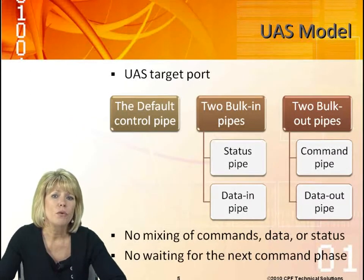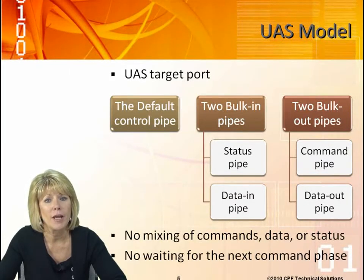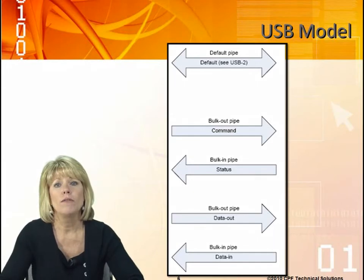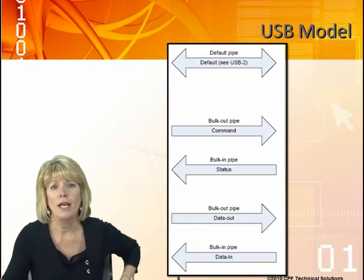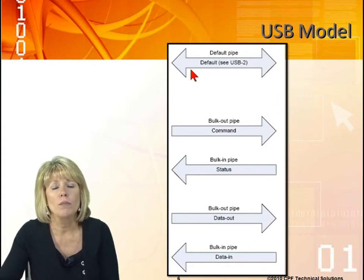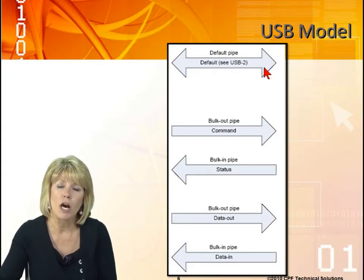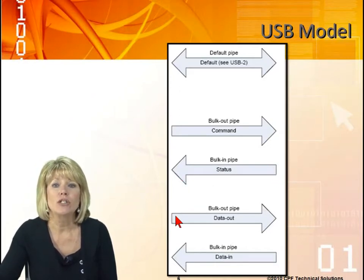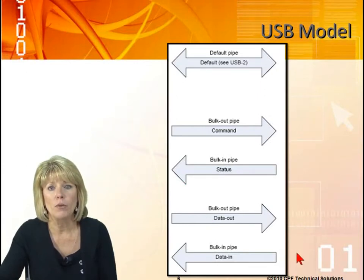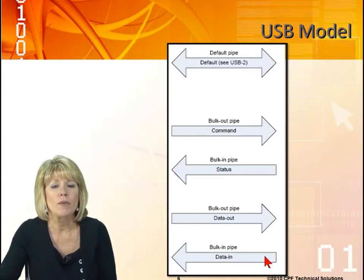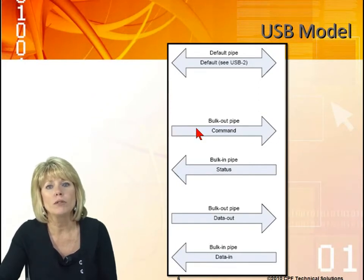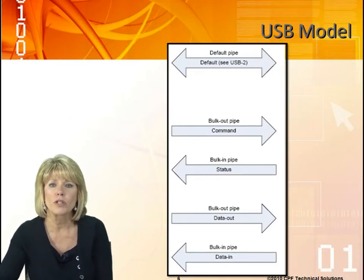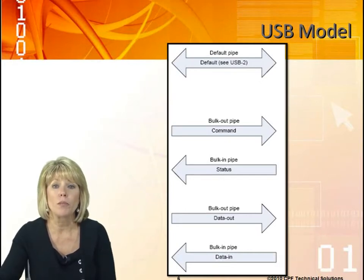There is no waiting for the next command phase because we have a separate command pipe. Here's an example of the pipe communication in UAS. We have the default control endpoint — that's a requirement from USB 2.0. Commands go out on the bulk out pipe, status from the device comes back on the bulk in pipe, data to the device goes on the data out bulk endpoint, and data from the device comes on the bulk in pipe. We're able to queue up multiple commands and get status in order of execution by having these different pipe requirements. There are four different endpoint requirements.